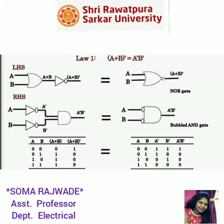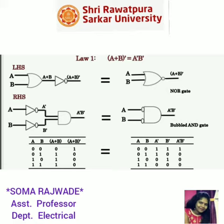Here we are using AND gate, OR gate, and NOT gate for this function. For the left hand side, (a + b) bar: for a plus b we are using an OR gate — the OR gate outputs high if any input is high — and after that we add a NOT gate for the invert function. For the right hand side we are using an AND gate, which outputs high only if both inputs are high, and also a NOT gate for the invert function. The truth table proves the first law.